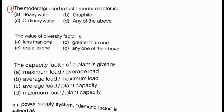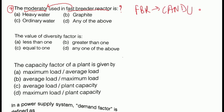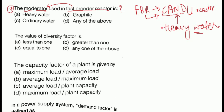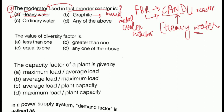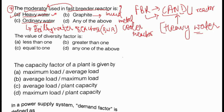Next is question number 7. The moderator used in a fast breeder reactor is — this question is related to nuclear power plant. One type of fast breeder reactor is the CANDU reactor (Canadian Deuterium Uranium reactor), and in this reactor heavy water is used as a moderator. In some fast breeder reactors, heavy water is used as a moderator. Therefore option A — heavy water — is the correct answer. In liquid metal cooled reactors, ordinary water is used as a moderator in boiling water reactors.